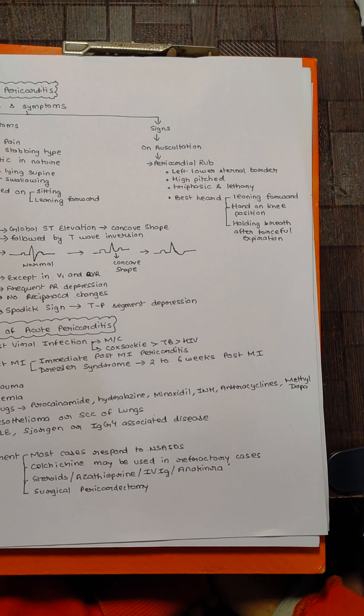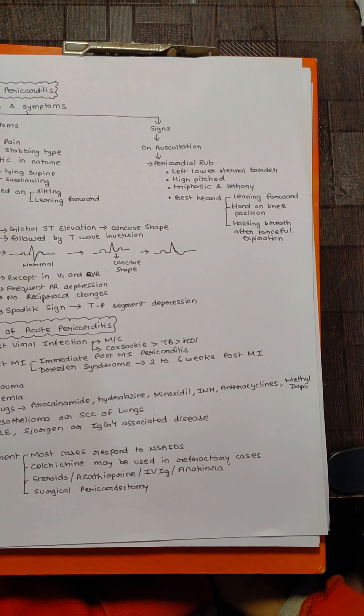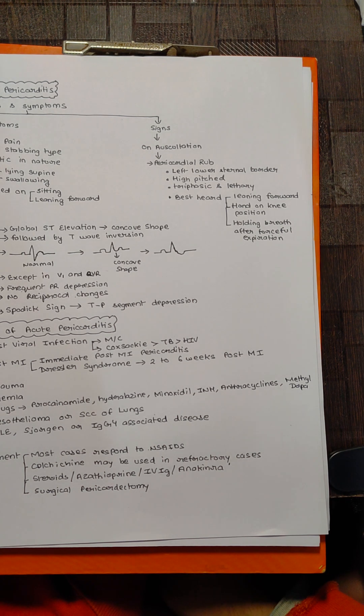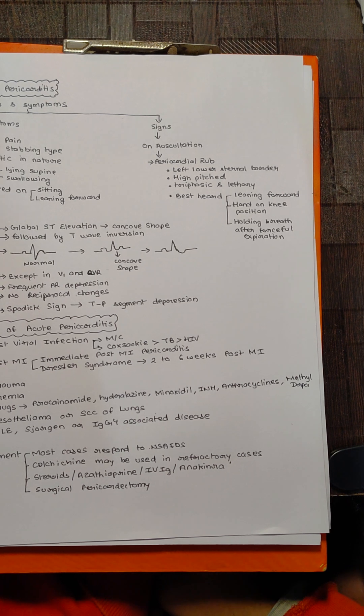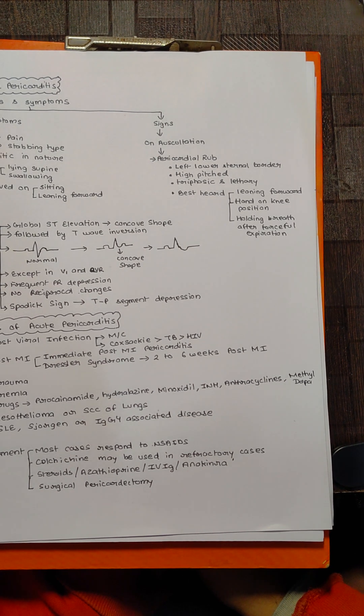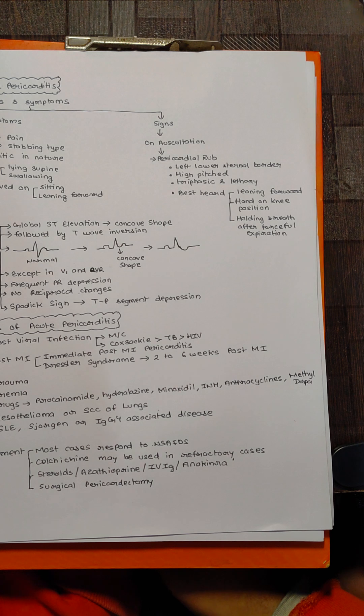The pericardial rub is best heard in the left lower sternal border. It is very high-pitched, triphasic in nature, and leathery. However, it is best heard when the patient is leaning forward with his hands on knee and holding his or her breath after a forceful expiration.